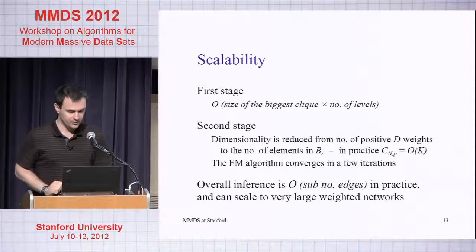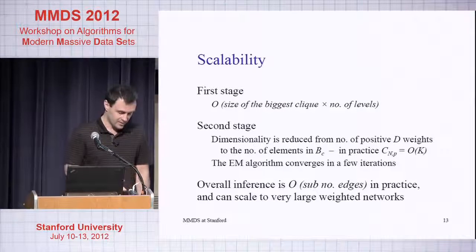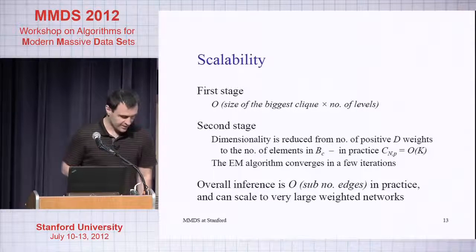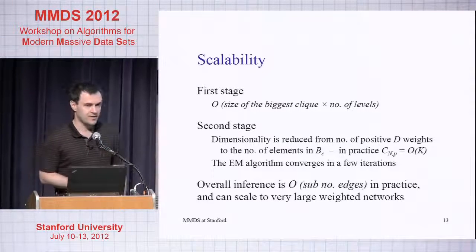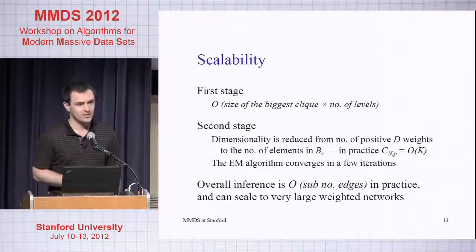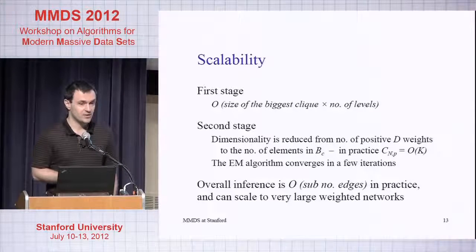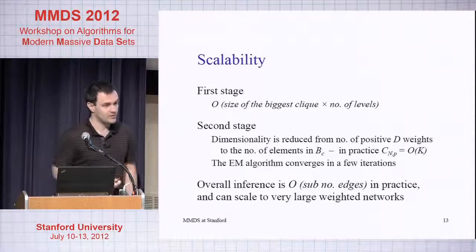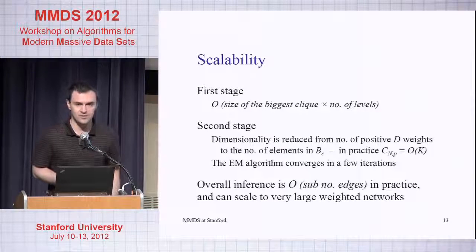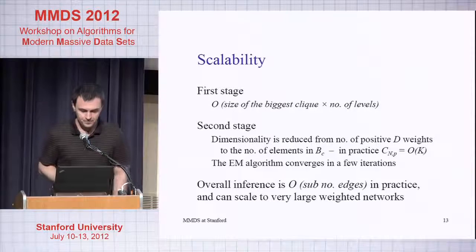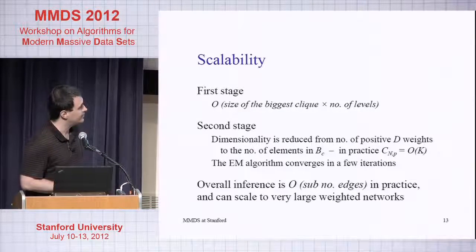Scalability: you can do some analysis about it. In practice, in theory we can prove that fitting this algorithm has a complexity that's linear in the number of positive edge weights. So when you compute the likelihood, that means you never have to touch any of the zeros, which in some applications may be a problem because zeros may be informative. But on Facebook we decided zeros are not that informative, so we threw them all away.